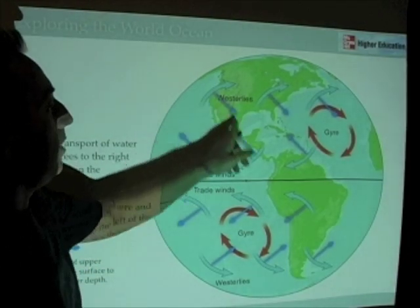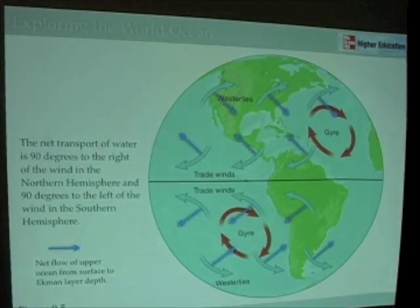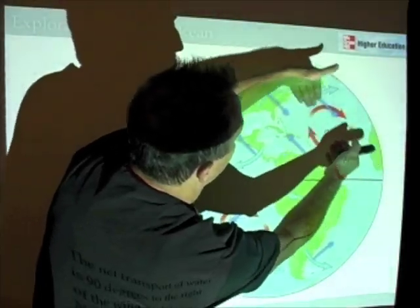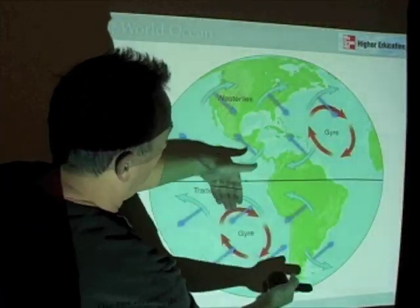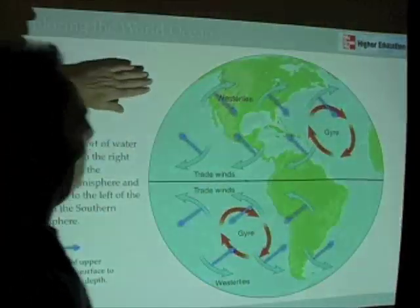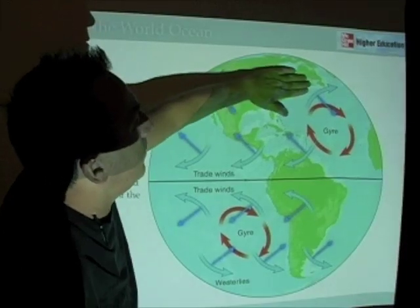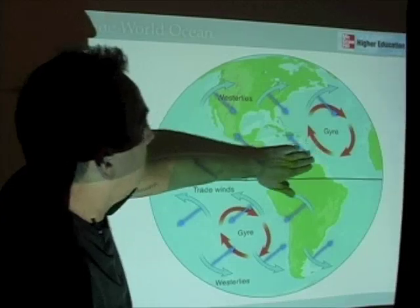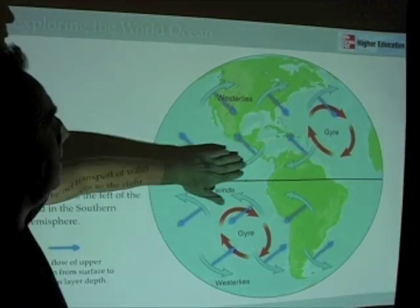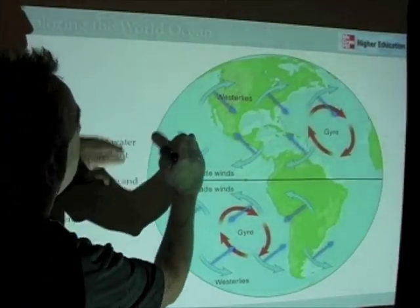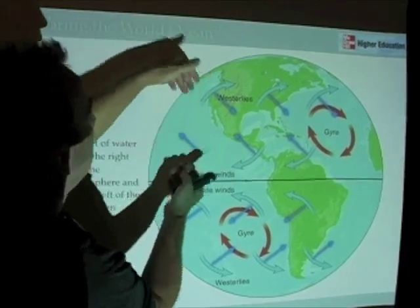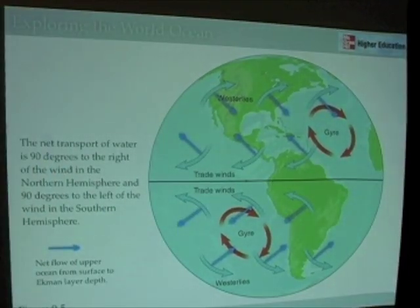If we add an arrow for Ekman Transport on that, here's what we find. Water is getting pushed towards the centers of the ocean. So the westerly flows are pushing water in this direction. The trade winds moving from east to west are moving water in this direction, and water is piling up, so to speak, in the middle of the oceans.